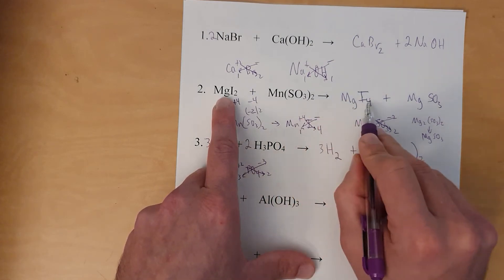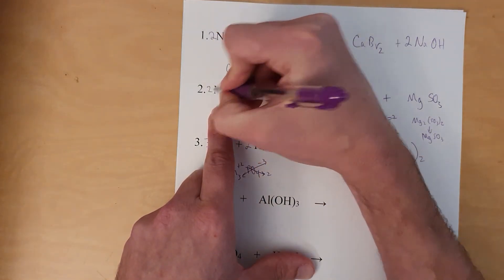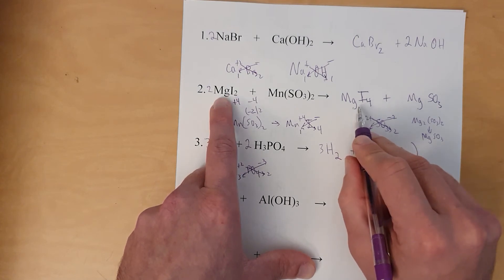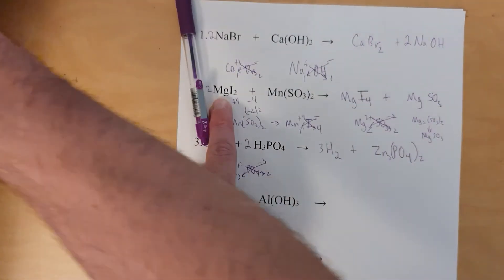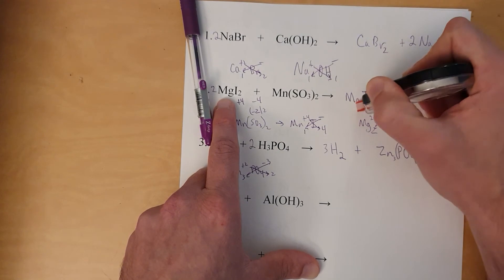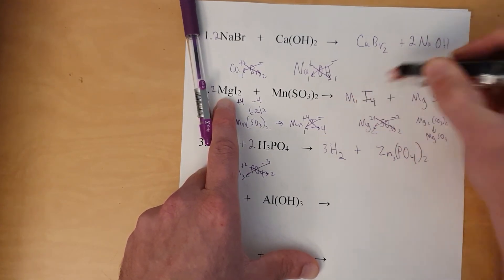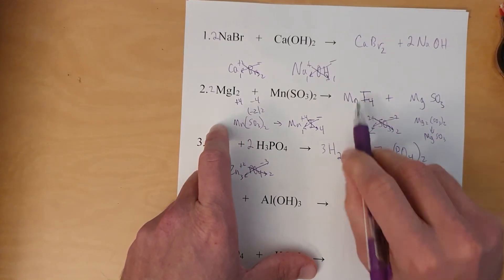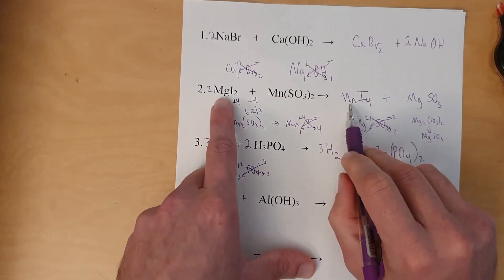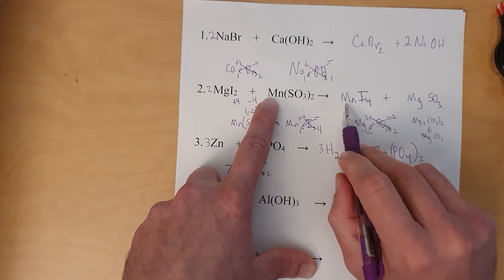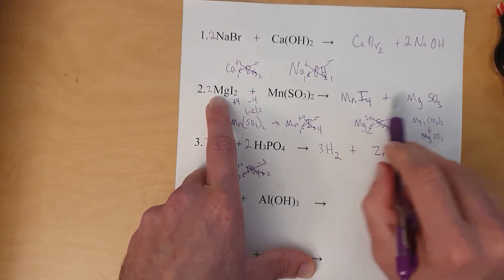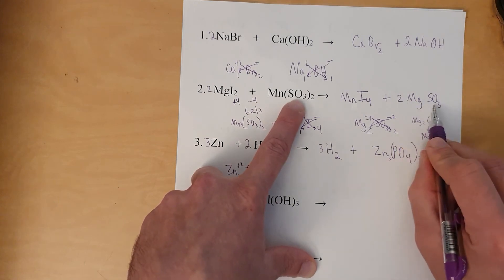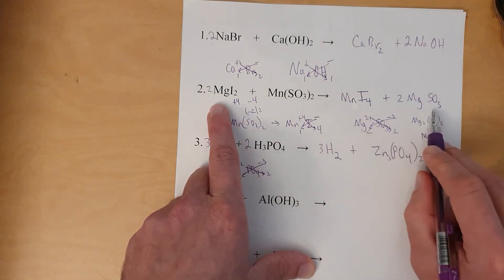Now balance. Four iodines vs. two iodines — put a 2 here; now it's four and four. One manganese, one manganese is good. But two magnesium vs. one magnesium — put a 2 here, and that works because now we have two sulfites as well. That completes it.